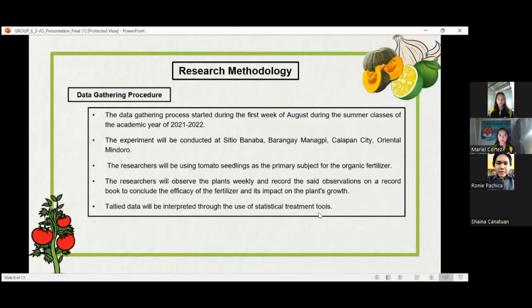For the data gathering procedure, the data gathering process will start during the first week of August, during the summer classes of academic year 2021-2022. The researchers will be using tomatoes as the primary subject for the organic fertilizer. The researchers will observe the plants weekly and record the observations in a record book to include the efficacy of the fertilizer and its impact on the plant's growth. Collected data will be interpreted through the use of statistical treatment tools.